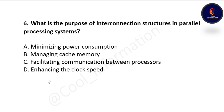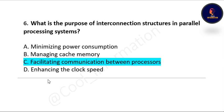Next question: what is the purpose of interconnection structure in a parallel processing system? Options are: minimizing power consumption, managing cache memory, facilitating communication between processors, and enhancing the clock speed. The correct option is C — facilitating communication between processors. All these questions are very important; do not miss any.